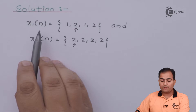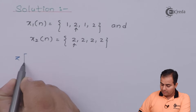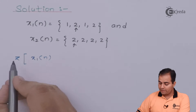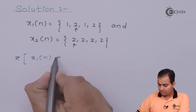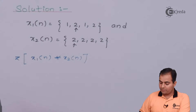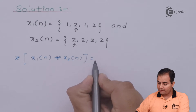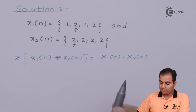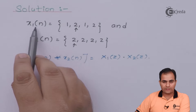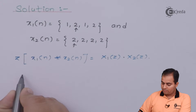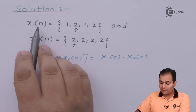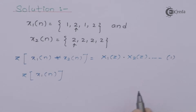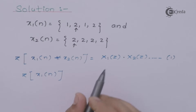We have to apply the convolution theorem, which means we are finding the Z-transform of the convolution between X1(n) and X2(n). So I have written: Z-transform of X1(n) convolved with X2(n) equals the product of the Z-transforms of both functions. The important step is to first find the Z-transform of X1(n) and then X2(n), then substitute X1(Z) and X2(Z) into this formula — mark this as equation number 1.